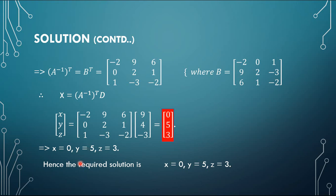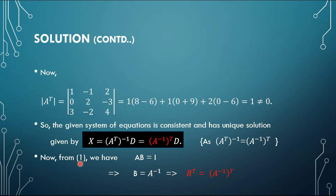So this was the worked problem where we used this very important result. This question has already come in Delhi 2017. Whenever in a system of equations you are getting a transposed matrix, you need to use this result, and these three steps are very, very important. I hope you are very much clear — try to solve one or two similar questions from Gupta Bansal or R.D. Sharma to practice this kind of question.